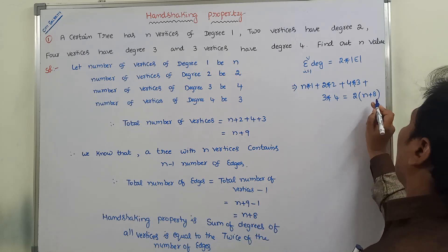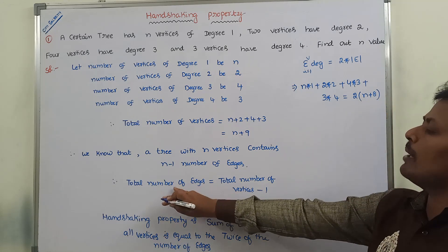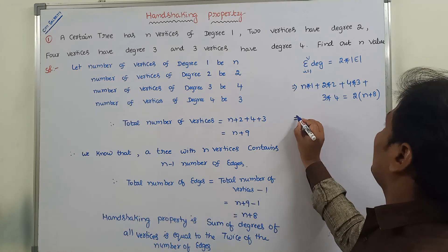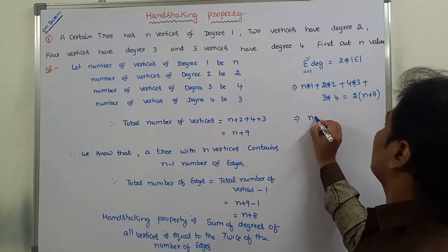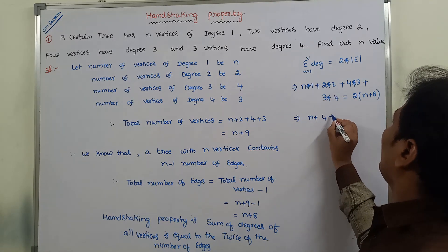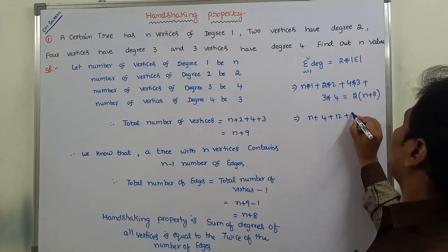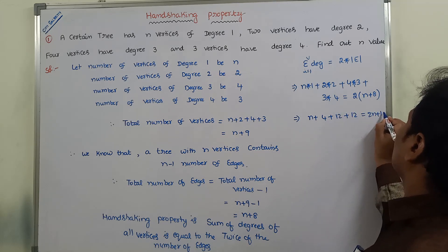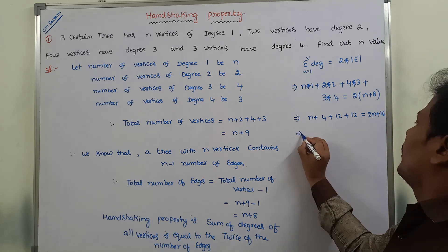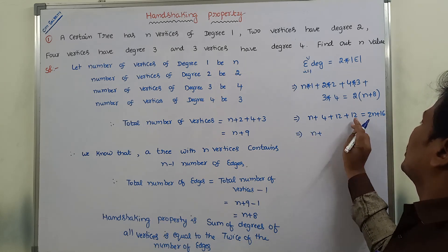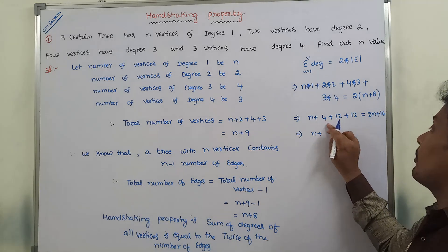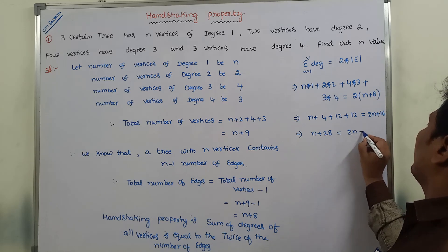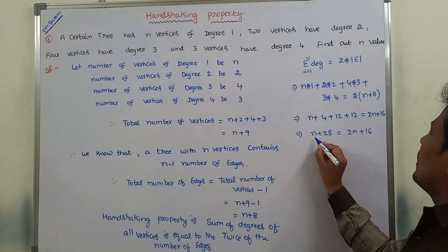The number of edges is n + 8. So the right-hand side is 2(n + 8) = 2n + 16. The left-hand side simplifies as: n + 4 + 12 + 12 = n + 28. Therefore: n + 28 = 2n + 16.